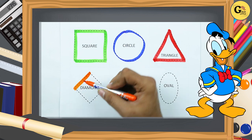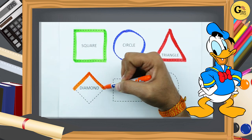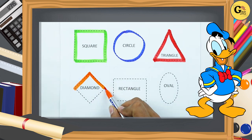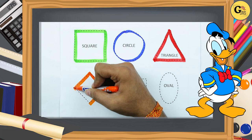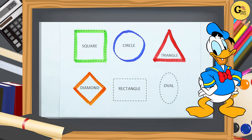One sliding line, two sliding line, three sliding line, four sliding line. It's a diamond. Orange color. Diamond.